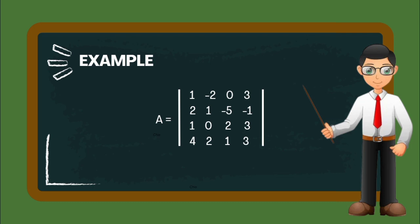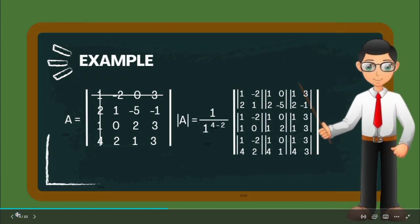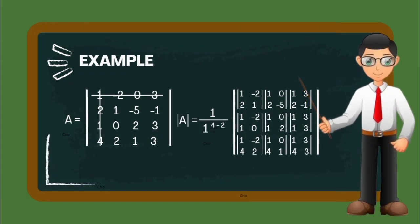First, we will choose our pivot. It must be a non-zero number that may be negative or positive. In this case, I choose the 1. Then, after choosing the pivot element, we will apply the formula which is the determinant of A equals 1 over A, which is the 1, raised to n, which is 4 minus 2. We will be focusing on this row and column.